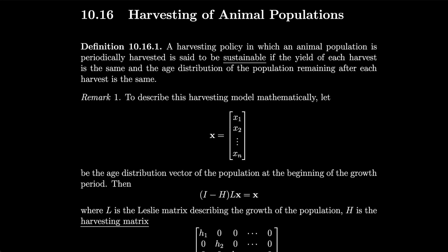Section 10.16: Harvesting of animal populations. A harvesting policy in which an animal population is periodically harvested is said to be sustainable if the yield of each harvest is the same and the age distribution of the population remaining after each harvest is the same.